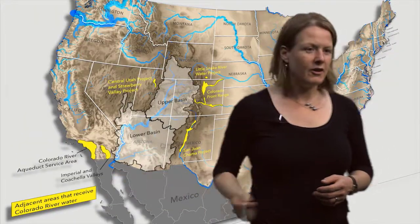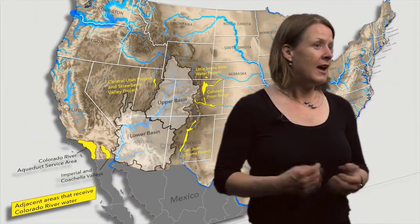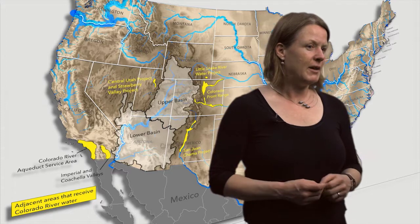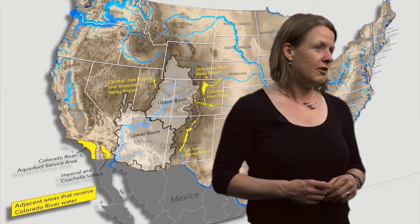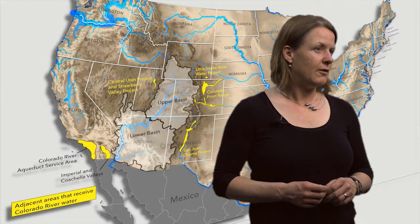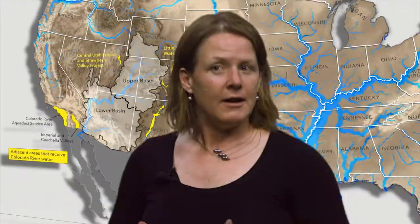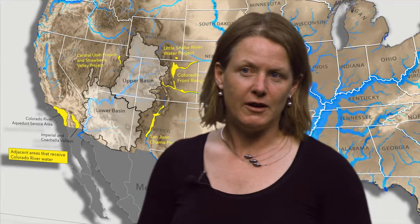Note on this map the yellow highlights — these are urban and agricultural areas outside of the basin that receive Colorado River water. In addition, the river serves about 2.3 million people and about 500,000 acres of farmland in Mexico once it crosses the international border.